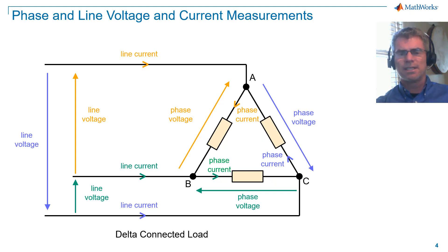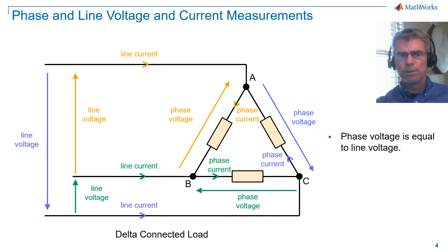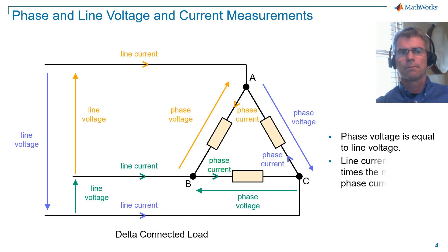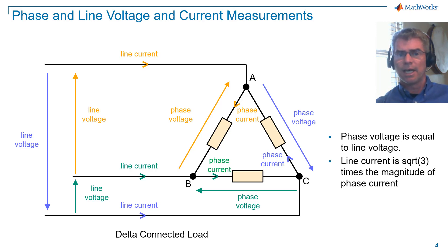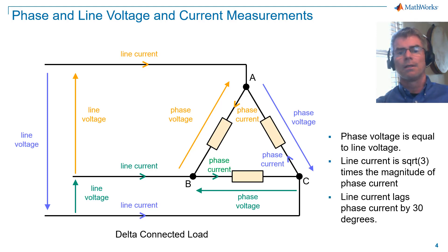For a delta connected load, phase voltage is equal to line voltage. Line current is square root of three times the magnitude of phase current. Line current lags phase current by 30 degrees.